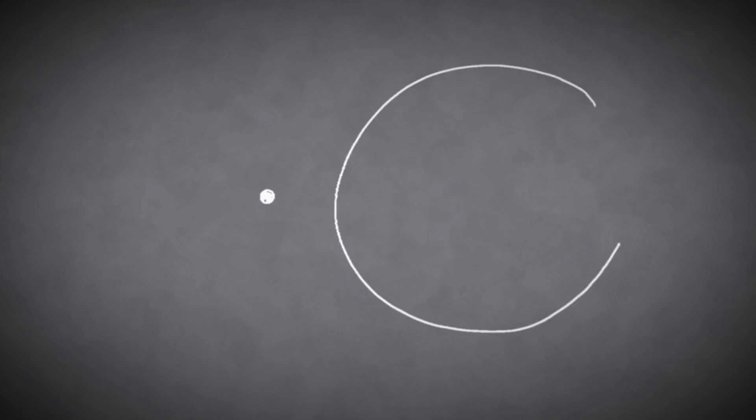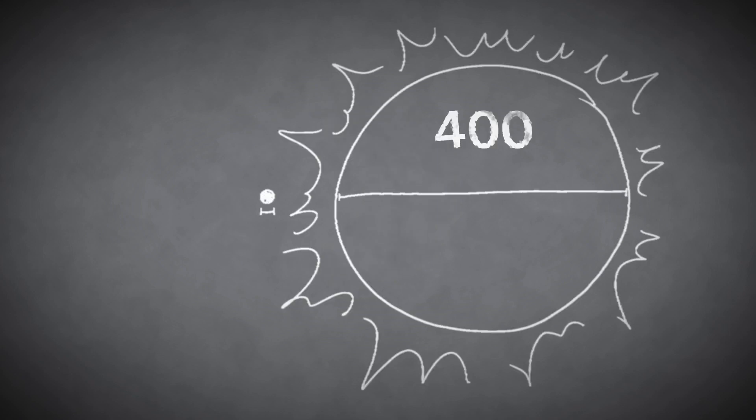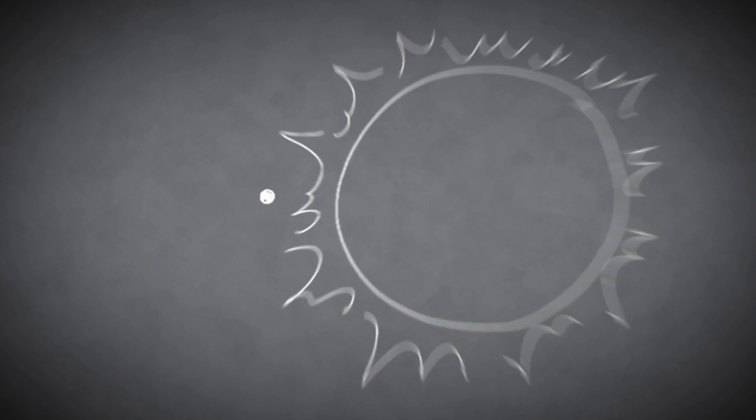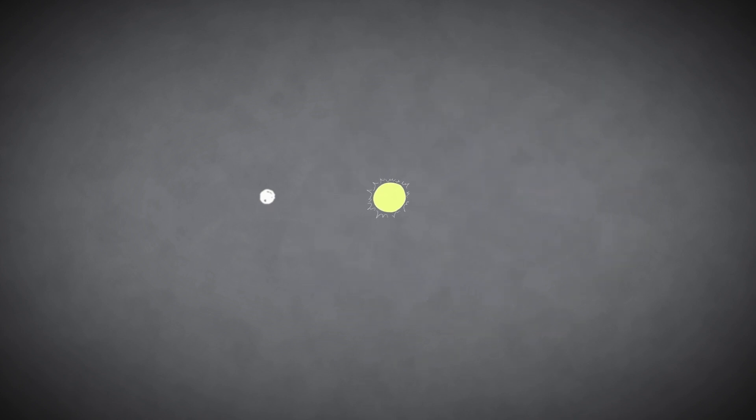How can the tiny moon do this when the sun is actually 400 times its diameter? Well, the sun happens to be 400 times farther away than the moon, so to observers on Earth, they both appear the same size in the sky.